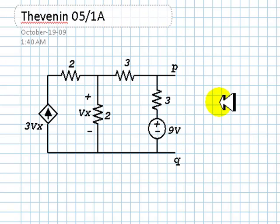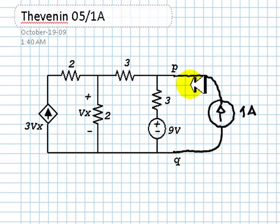We begin with the 1-Amp test. We connect a 1-Amp external current source at the port where we are trying to determine the Thévenin equivalent and find out what is the voltage that appears at that port, the one that we call V1A.